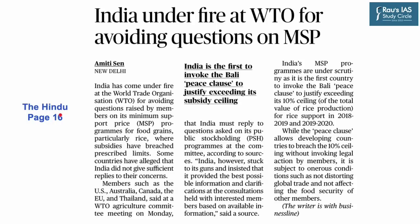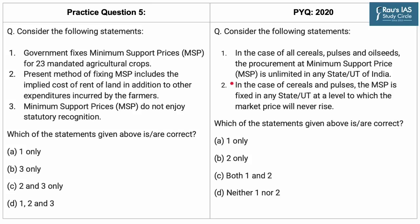Moving on to the 5th article of the day, which appeared on page 16 of The Hindu newspaper. The article highlights that India has come under fire at the World Trade Organization for avoiding questions raised by its members on its Minimum Support Price program, or MSP. India's MSP program and public stockholding measures for ensuring food security is an important topic in the economy section, as seen in this 2020 PYQ. Here is practice question number 5. Statement 1: The government fixes MSP for 23 mandated agricultural crops. This statement is incorrect because the government fixes MSP for 22 agricultural crops and a fair and remunerative price for sugarcane, fixed on the basis of recommendations of the Commission for Agricultural Cost and Prices, known as CACP.